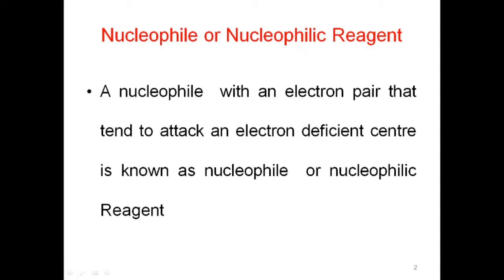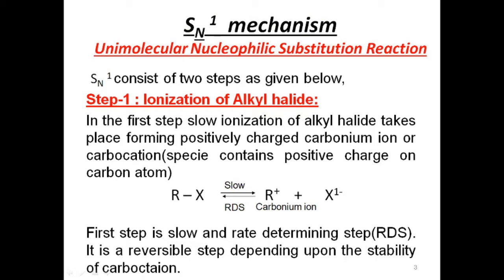Now let's come to the mechanism of SN1 reaction — substitution nucleophilic unimolecular, where 1 stands for unimolecular. The reaction consists of two steps. Step 1 is the ionization of alkyl halide. The alkyl halide (RX) breaks to form a carbonium ion, also known as a carbocation — a species with positive charge on carbon — forming R⁺ plus X⁻ (halide ion).